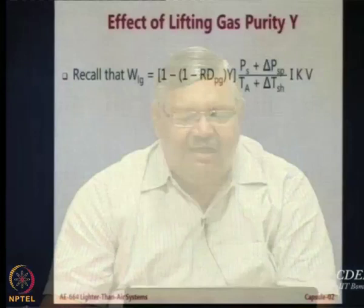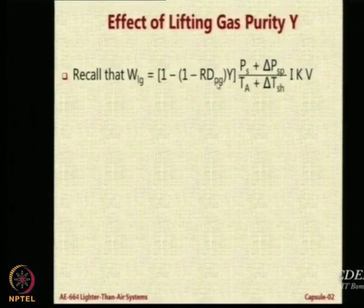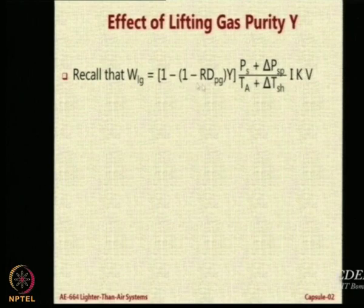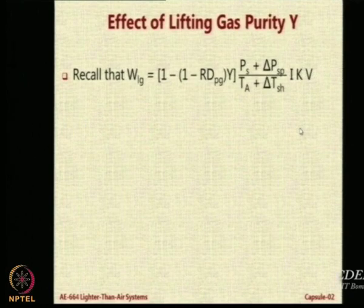The value of 1 minus RdPg is a fixed number depending on the LTA gas that you use. In other words, it will be 1 minus K, some constant K, into Y, into the pressure upon temperature, into I into K into V. This will be the WLg.